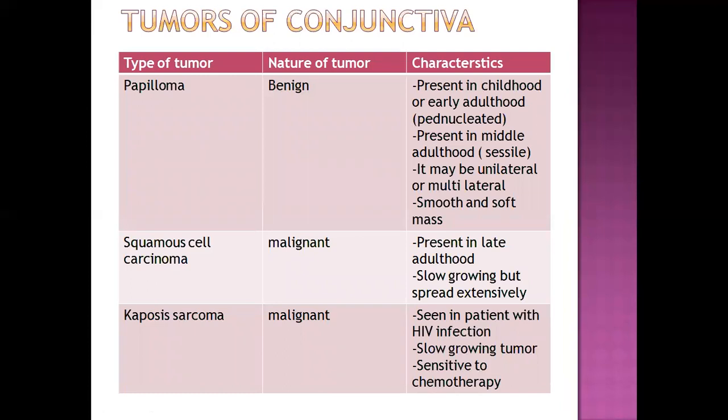Next is tumor of conjunctiva. There are three kinds: papilloma, squamous cell carcinoma, and Kaposi's sarcoma. Papilloma is benign, whereas squamous cell carcinoma and Kaposi's sarcoma are malignant. Papilloma is present in childhood or early adulthood — if present in childhood or early adulthood it is pedunculated, and if present in middle adulthood it is called sessile. It can be unilateral or bilateral, and presents as a smooth, soft mass.